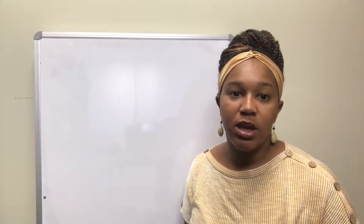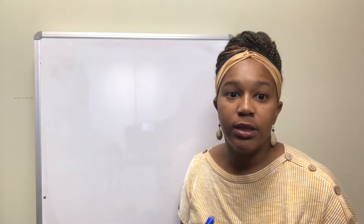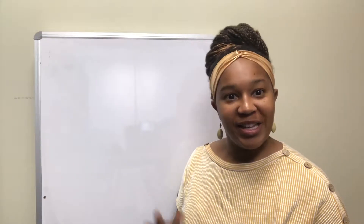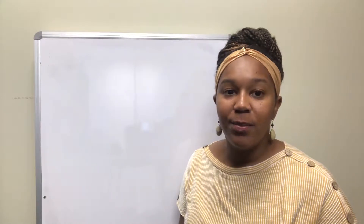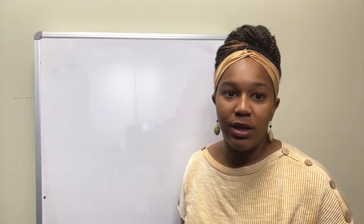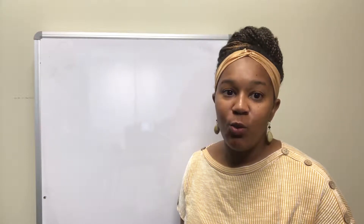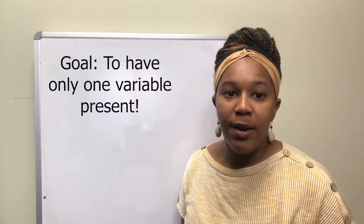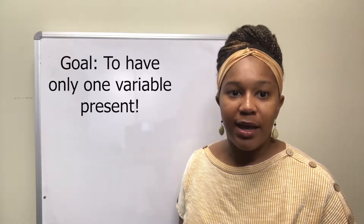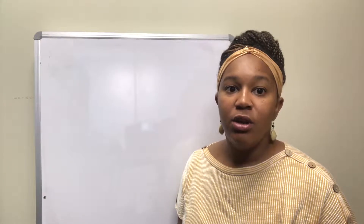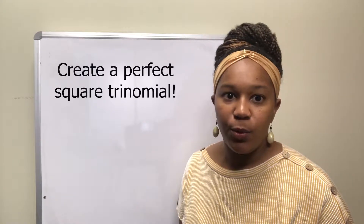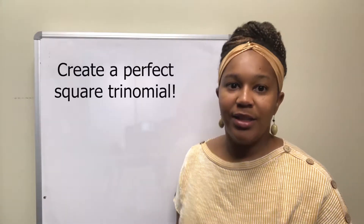In this video, we're going to focus on solving quadratic equations using the completing the square method. Completing the square has a lot of steps involved, but the whole purpose is to rewrite the quadratic equation so that it has only one x or one variable written. Whenever you have only one variable, you can solve it by isolating the variable. You complete the square by creating a perfect square so you can isolate the x.